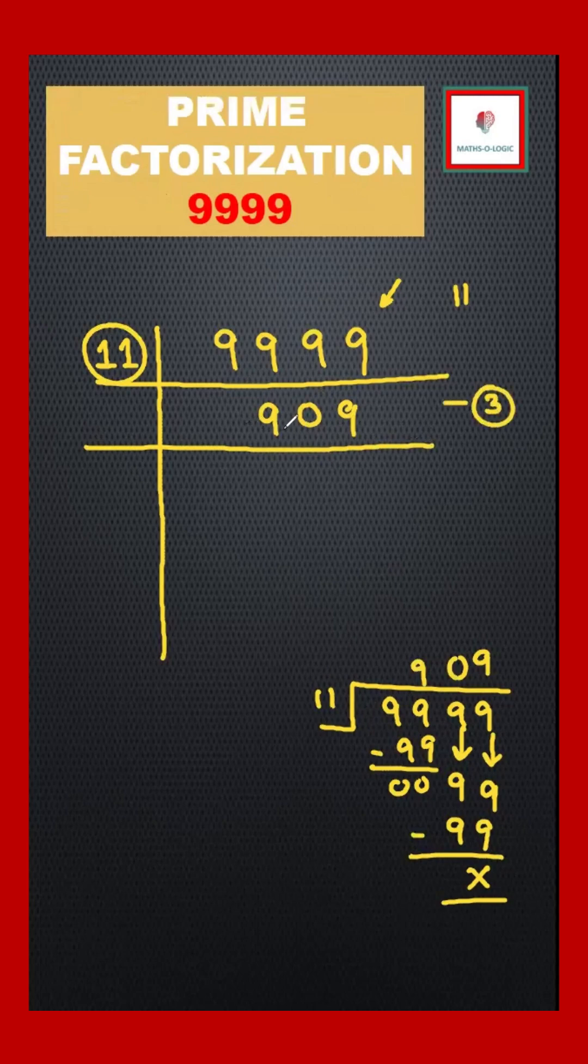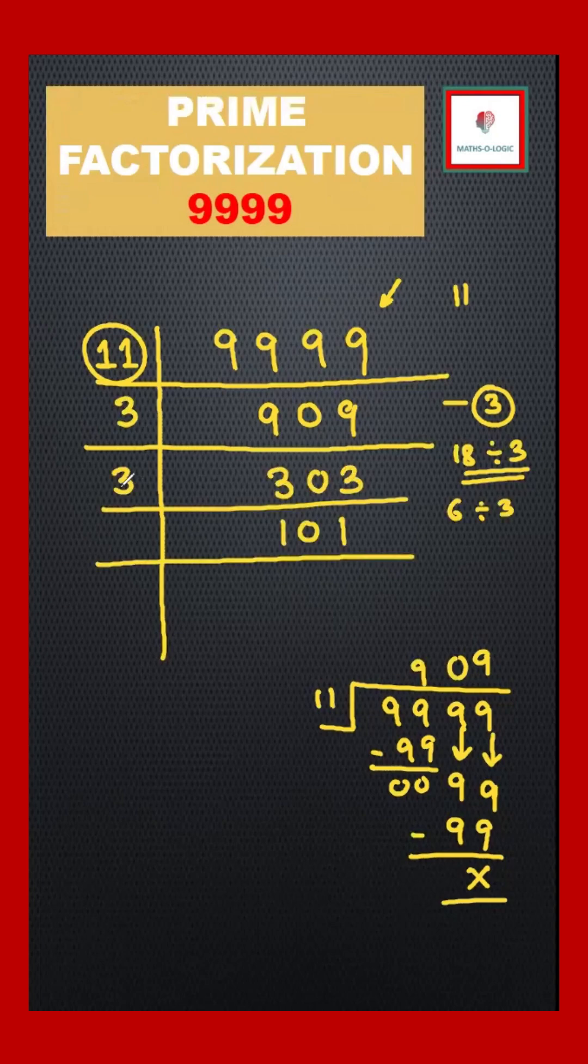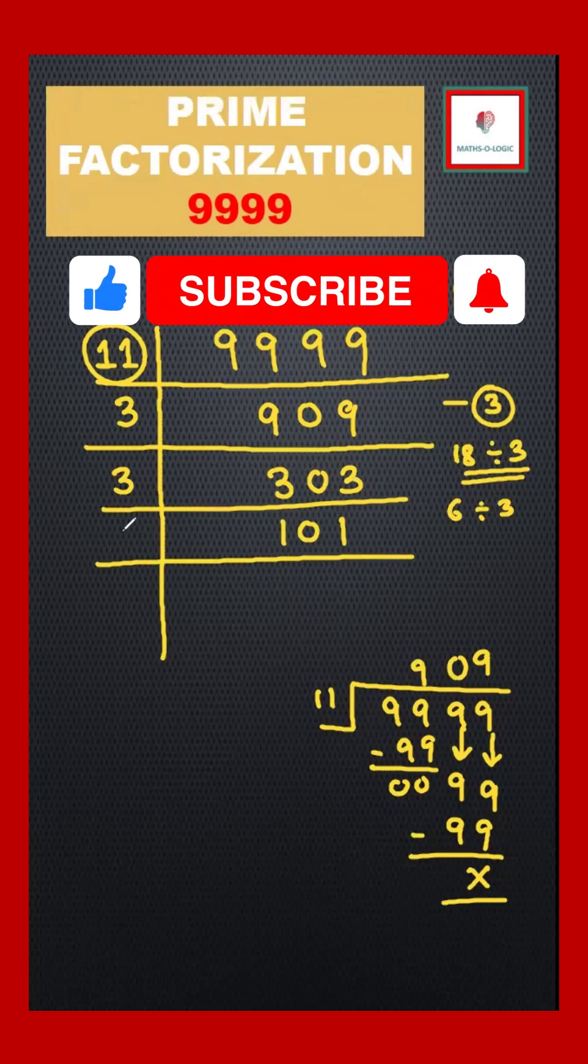909 divided by 3 gives 303. Now dividing 303 by 3, I get 101.